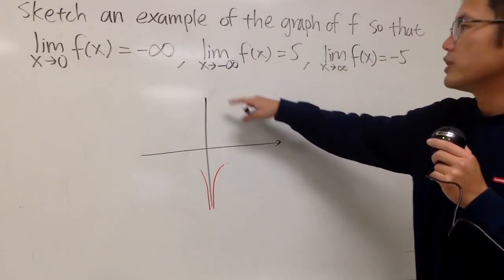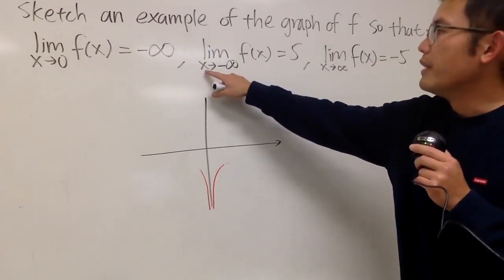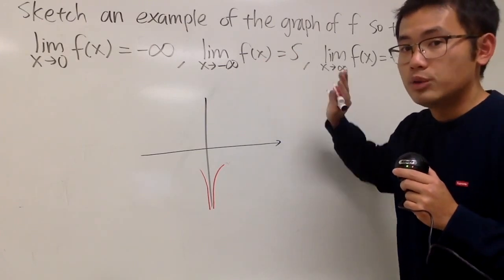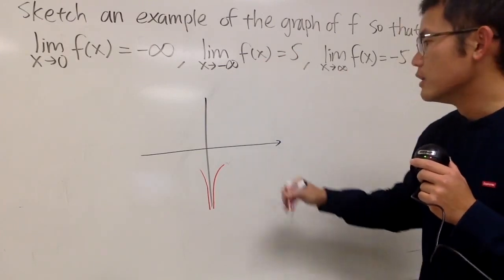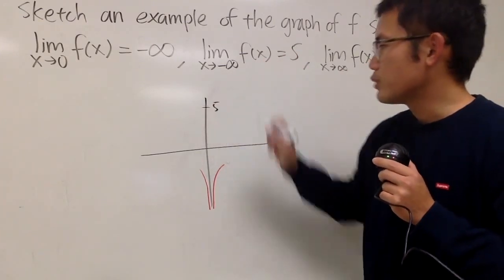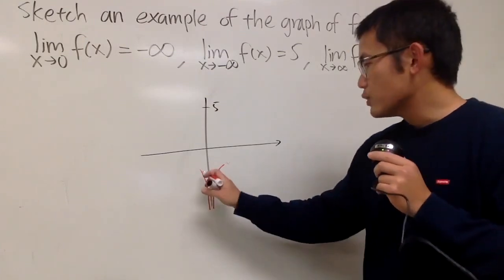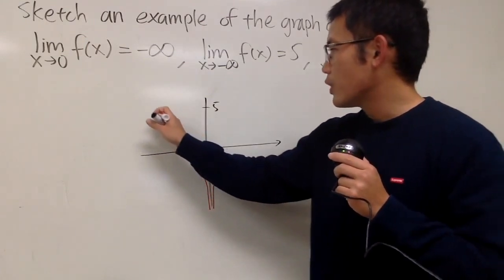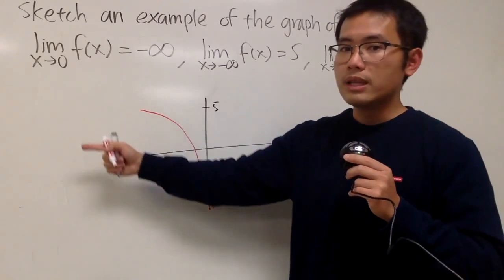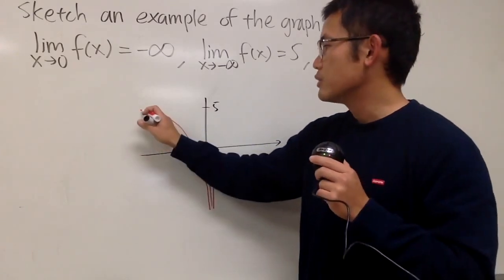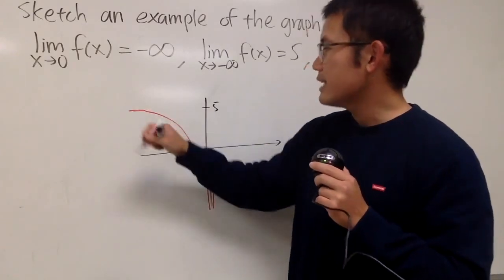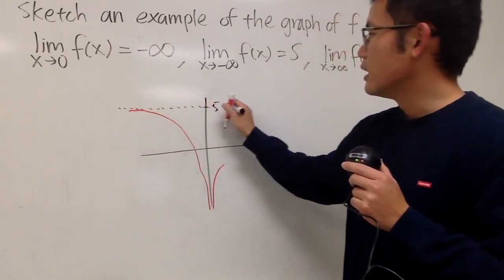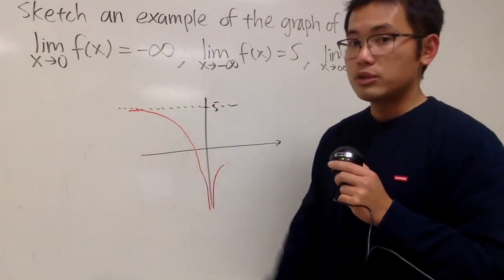For the second piece of information, it says when x is approaching negative infinity, our limit is equal to 5. So I will indicate that — let's say this right here is 5. We'll just extend it so that you see when x is going all the way toward the left, you end up with a horizontal asymptote like this.